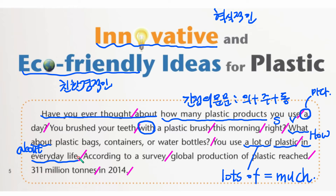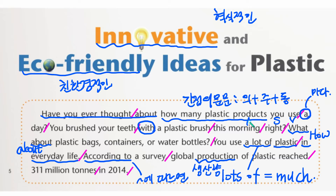'In everyday life'는 일상생활에서, 덩어리 표현으로 외워두십니다. 'According to'는 뭐뭐에 따르면이라는 뜻으로 자주 나오는 표현입니다. 'Global production of plastic'이 주어이며 'production'은 생산량입니다. 'Reach'는 어디어디에 이르다, 도달하다라는 말이에요. 'Million'은 100만이고, 311 million은 3억 1100만으로 계산됩니다. 독해를 할 때는 정확한 숫자보다 큰 분량을 생산했다고 빨리 이해하고 넘어가도 됩니다. 연도수 앞에는 전치사 'in'을 씁니다.